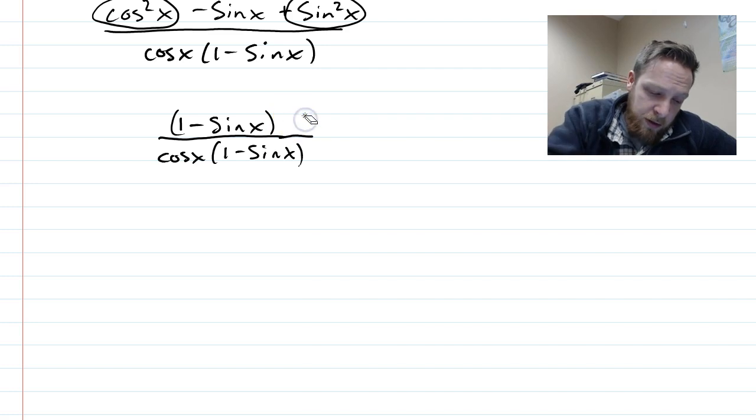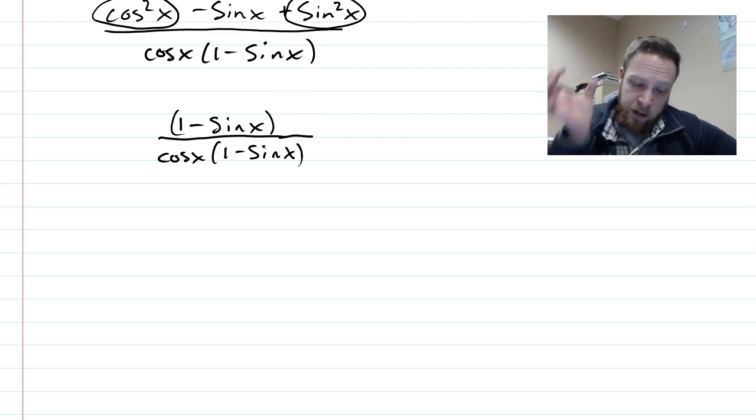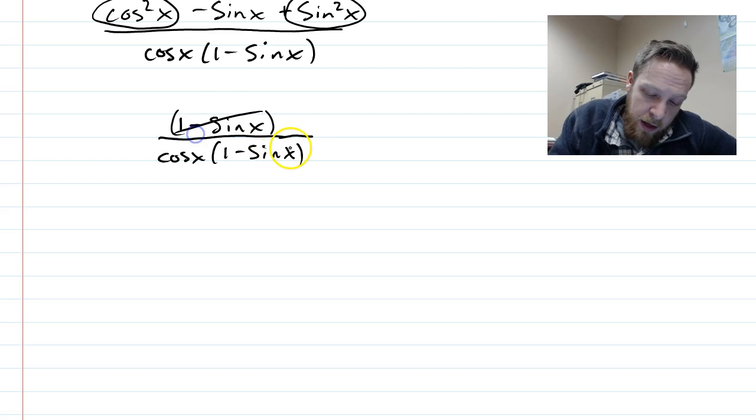What I need to do then is make sure that, yes, I have that binomial chunk on top and on bottom, and then you can cancel those out. So if I cancel something out on top and there's nothing left over, there's just a one, and downstairs I have cosine x.